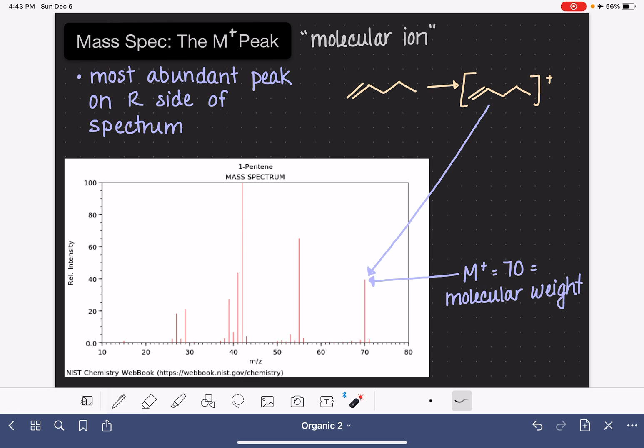One useful piece of information you can get from the mass spec, aside from the molecular weight, is this: if the M plus peak is an odd number, for example, if the M plus peak was 71 or 73 or 75, this would tell us that we have an odd number of nitrogen atoms in our molecule.